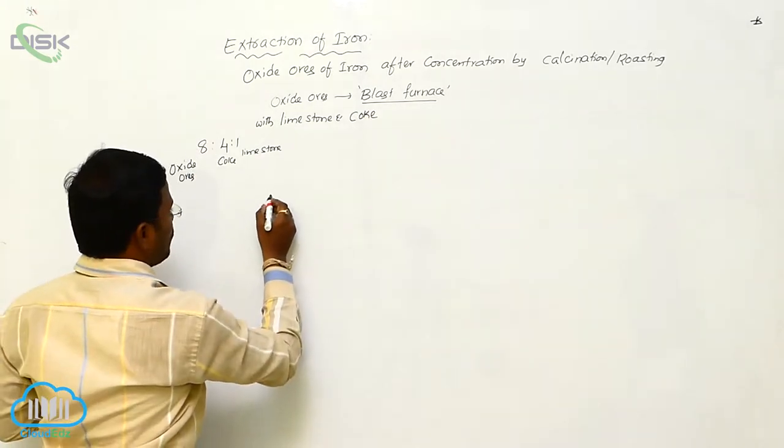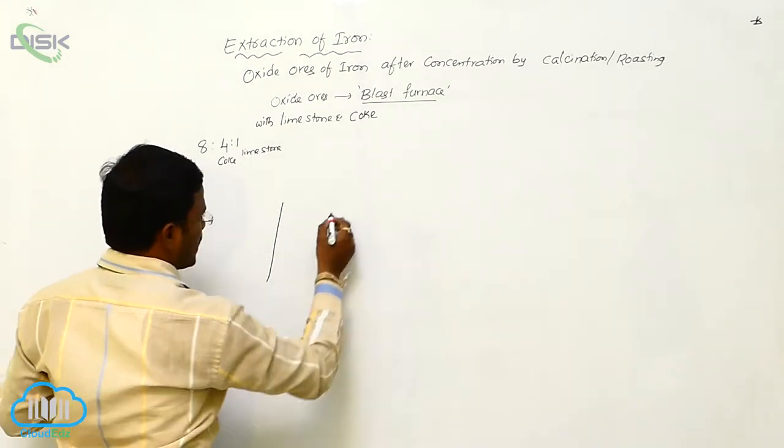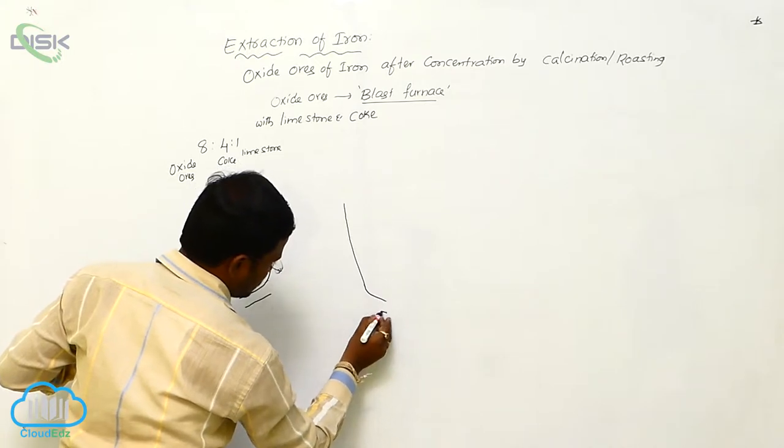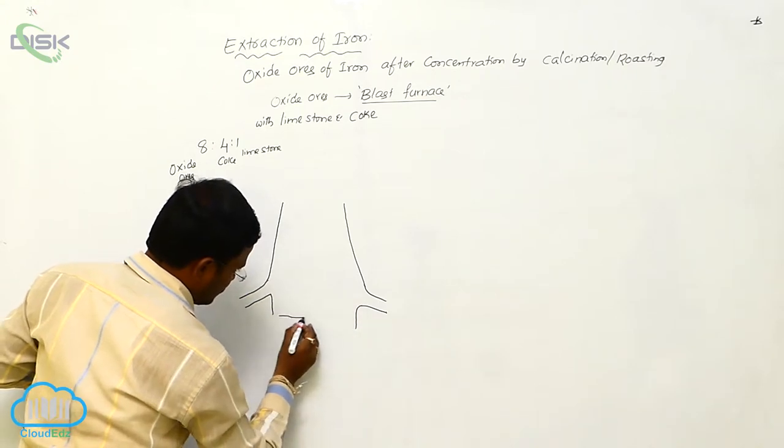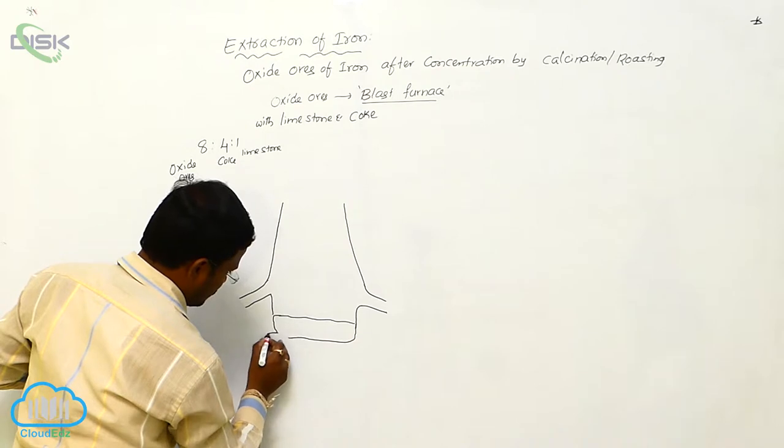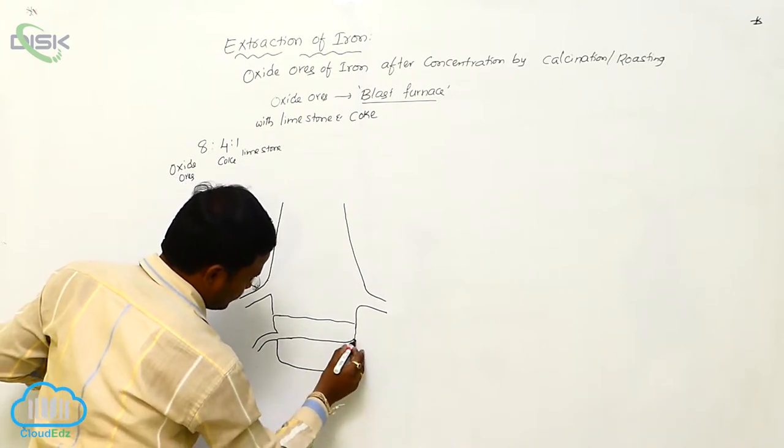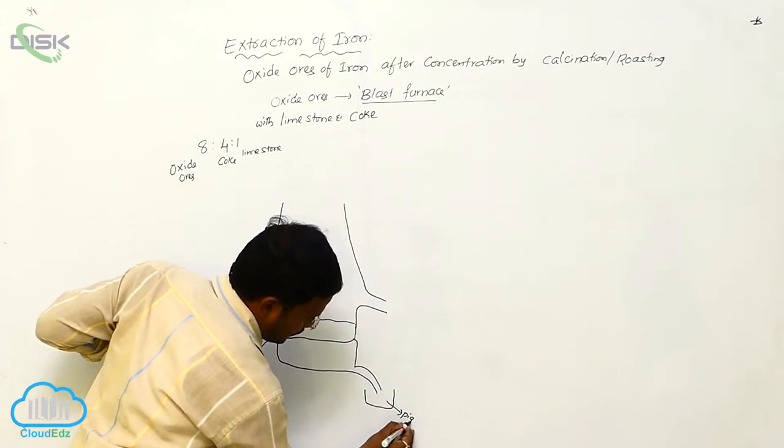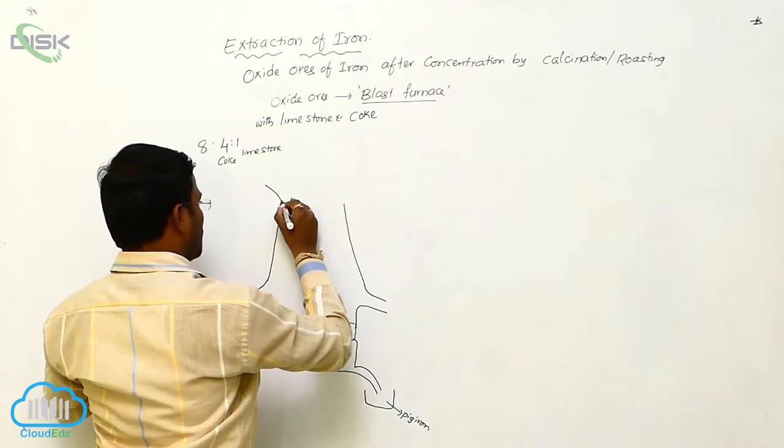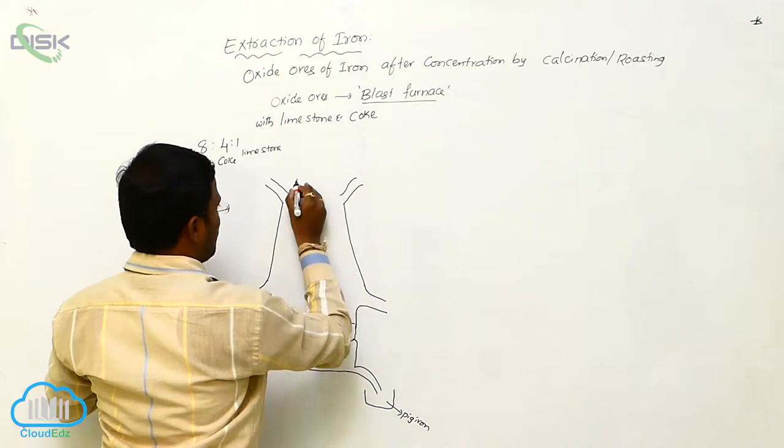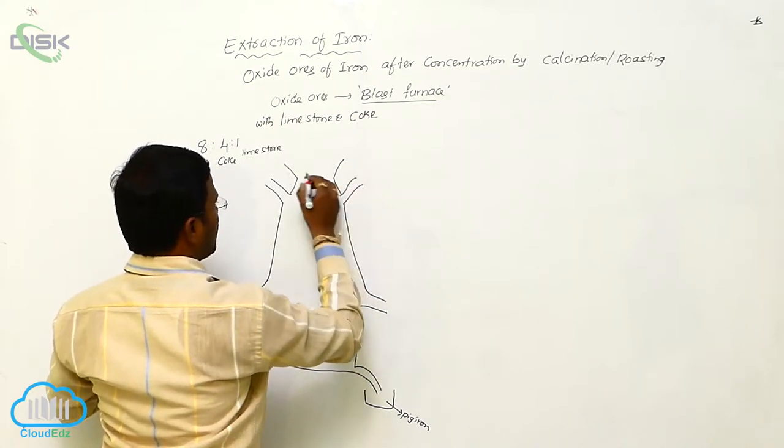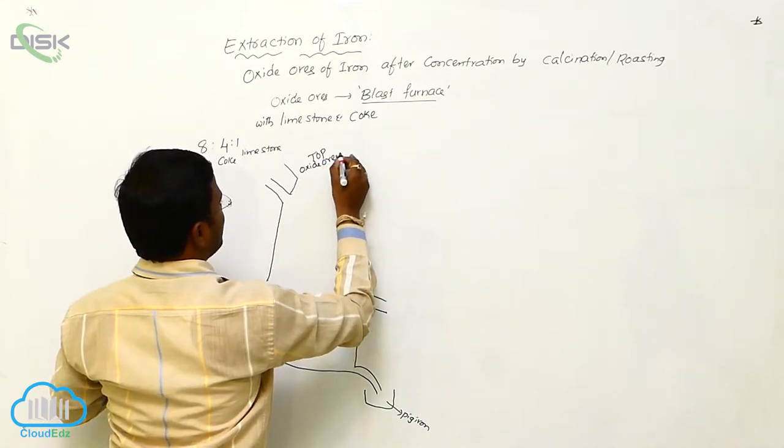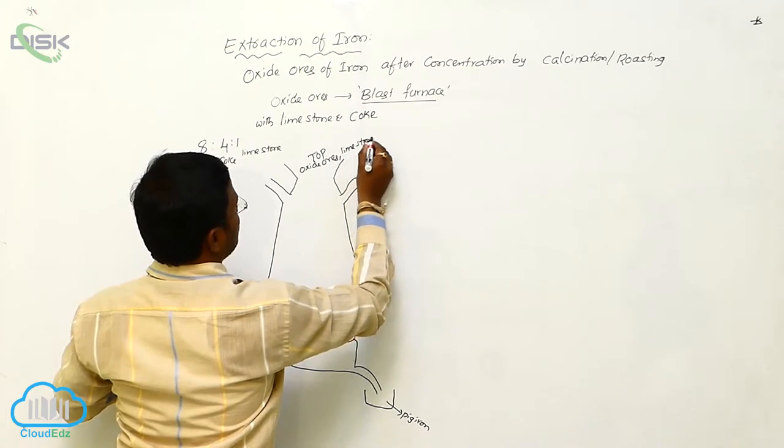The blast furnace will have various types of temperatures. From where we apply hot air into the blast furnace. This is the top of the blast furnace, from where we introduce oxide ores of iron, limestone, and coke.